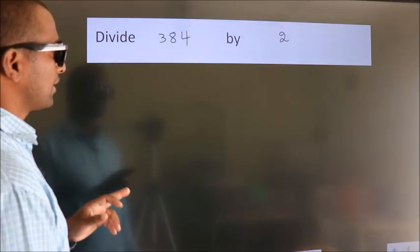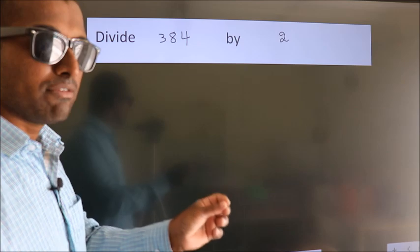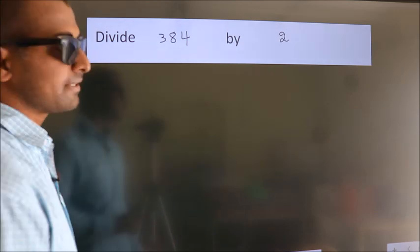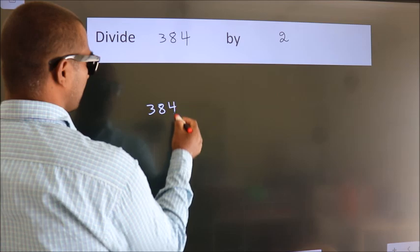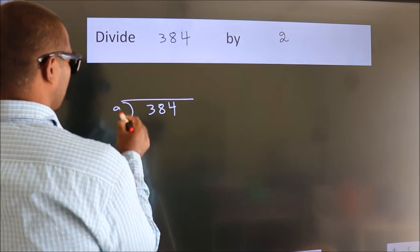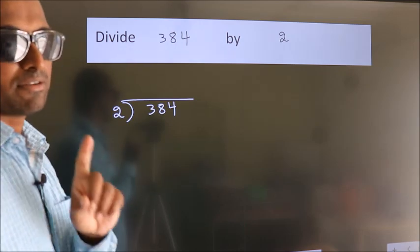Divide 384 by 2. To do this division, we should frame it in this way. 384 here, 2 here. This is your step 1.